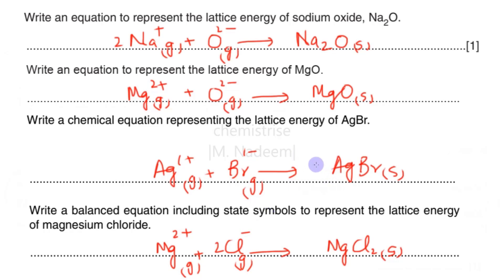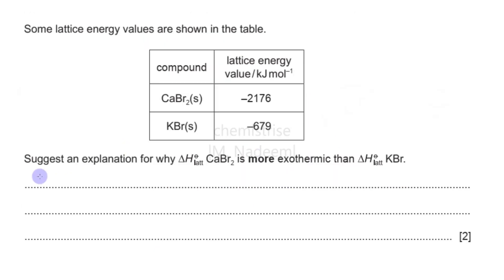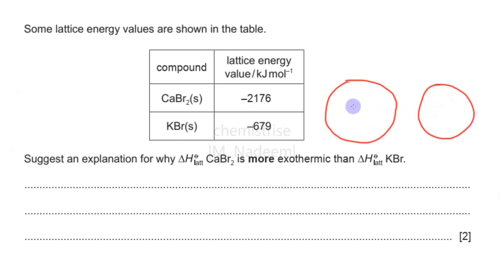In this question we have to explain why the lattice energy of calcium bromide is more exothermic than that of potassium bromide. Potassium ions and calcium ions are in the same period of the periodic table. Potassium has a +1 charge and calcium has a 2+ charge. Moving left to right, atomic size decreases, and calcium's 2+ charge means it has a greater charge density — it is smaller and more highly charged — so it forms stronger bonds with bromide ions, giving a more negative lattice energy.